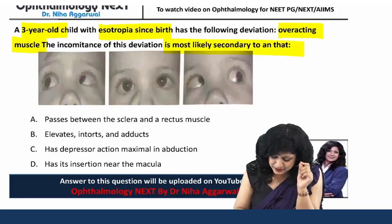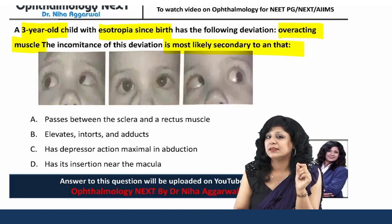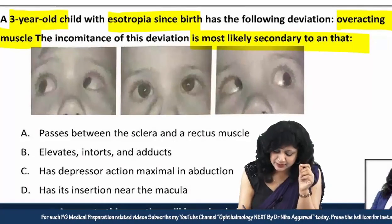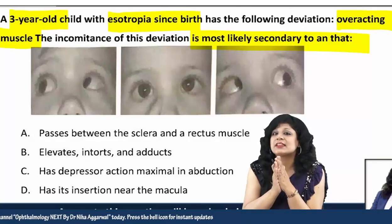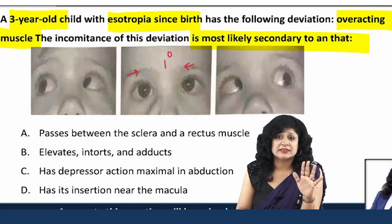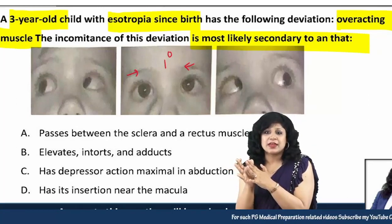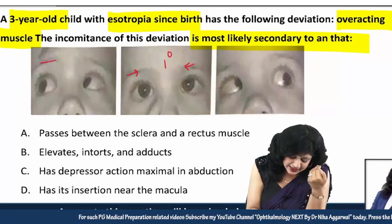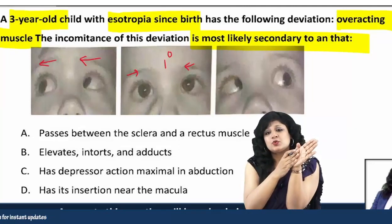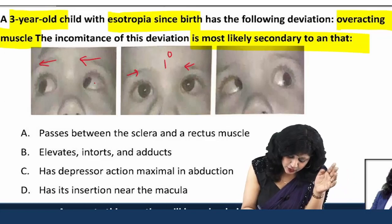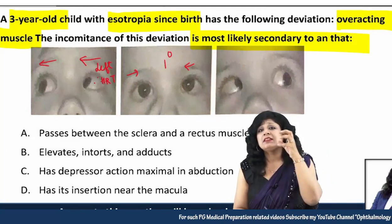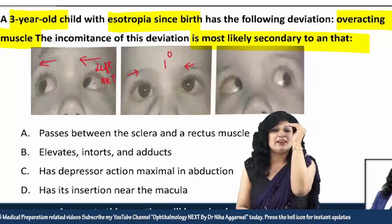To find the responsible muscle, look at the images. Always start with the central image — in the primary position, you just have esotropia, nothing else. When the child looks in the right gaze, this is dextro elevation, and you can see there is an increase with a left hypertropia.